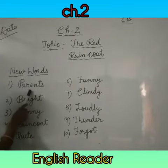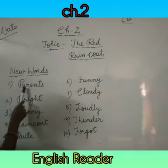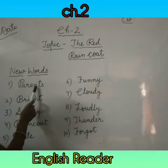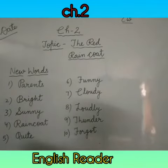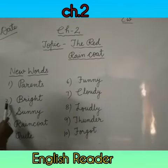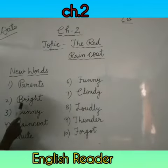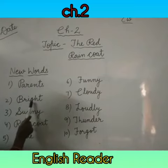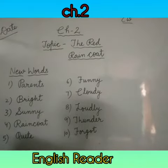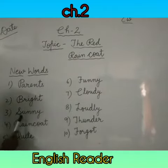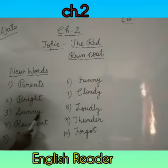First word is parents. P-A-R-E-N-T-S. Parents. Second word is bright. B-R-I-G-H-T. Bright. Third word is sunny. S-U-N-N-Y. Sunny.